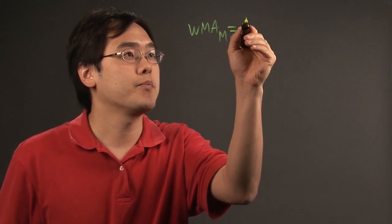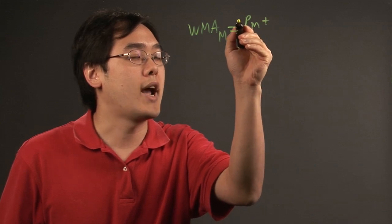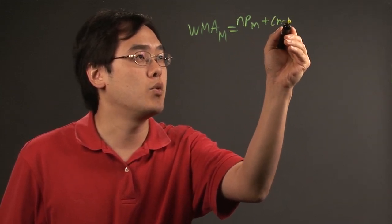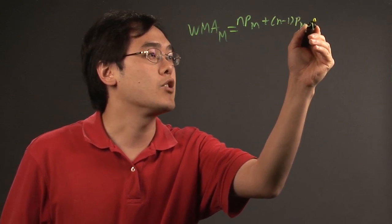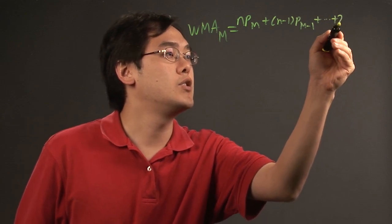In the numerator, you have n times p sub m, plus n minus 1 times p sub m minus 1, and you keep adding until you get to plus 2 times p sub m minus n plus 2